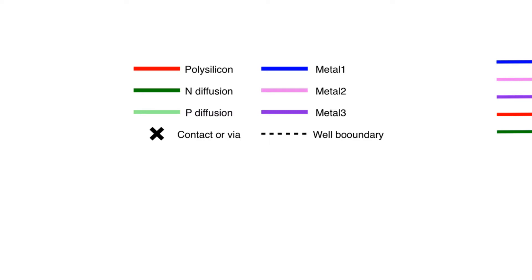A stick diagram uses colored sticks to represent the material used to create different tracks in the schematic. It looks kind of like a color-coded schematic in a way, with transistors being marked by the intersection of poly and active tracks instead of being marked by circuit symbols.